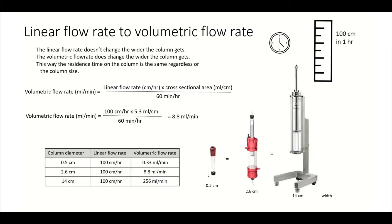The reason we do this is that the residence time on the column is the same regardless of the column size. So for a column diameter of 0.5 centimeters, we would end up with a volumetric flow rate of 0.33 mils per minute. And for a column diameter of 14 centimeters, the volumetric flow rate would be 256 mils per minute. But the linear flow rate for the column we're packing or the other two columns would still be the same, 100 centimeters an hour.